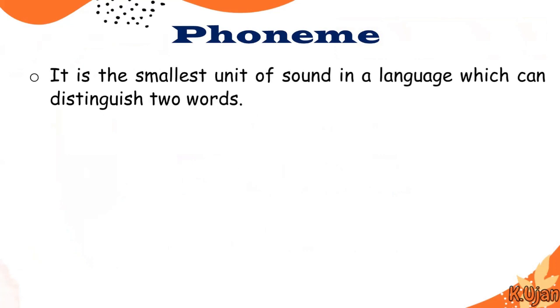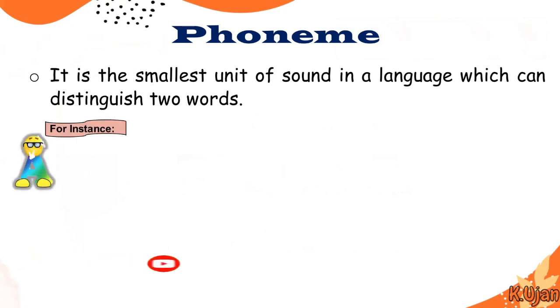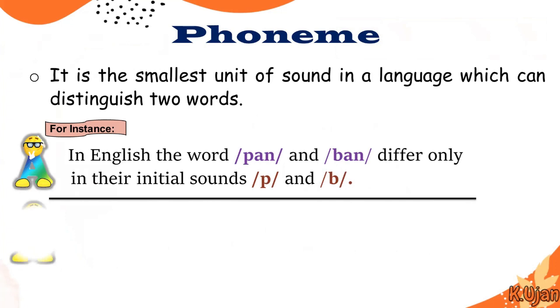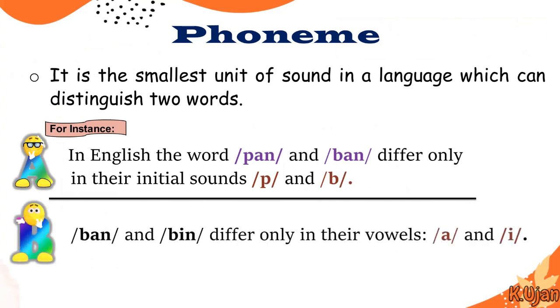A phoneme is the smallest unit of sound in a language which can distinguish two words. For instance, in English, the words 'pen' and 'ben' differ only in their initial sounds /p/ and /b/. Here is another example: 'ban' and 'bin' differ only in their vowel sounds /a/ and /i/.